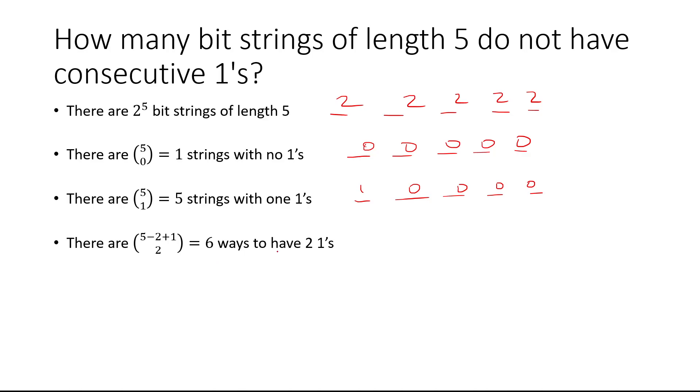Now if you want to choose 2 ones, there's going to be 5 minus 2 plus 1 choose 2 ways to do that, which is a total of 6.